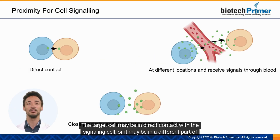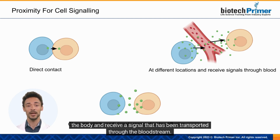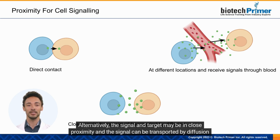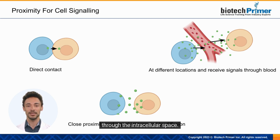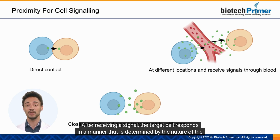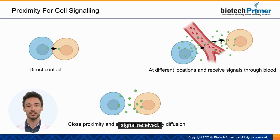The target cell may be in direct contact with the signaling cell, or it may be in a different part of the body and receive a signal that has been transported through the bloodstream. Alternatively, the signal and target may be in close proximity, and the signal can be transported by diffusion through the intracellular space. After receiving a signal, the target cell responds in a manner determined by the nature of the signal received.